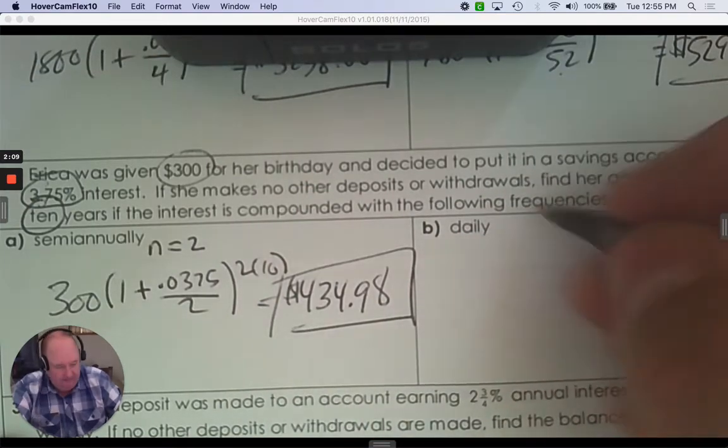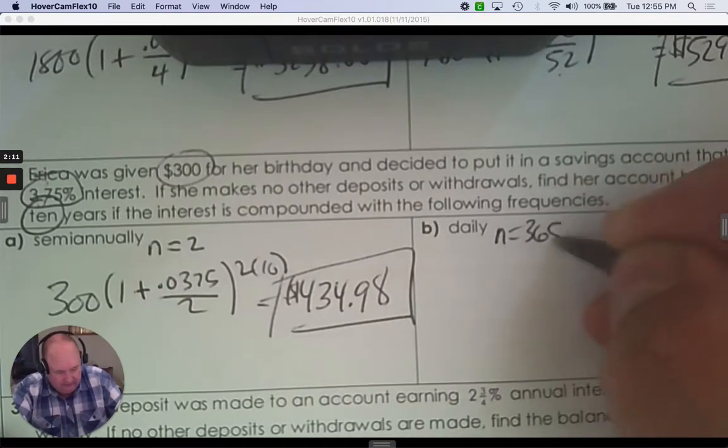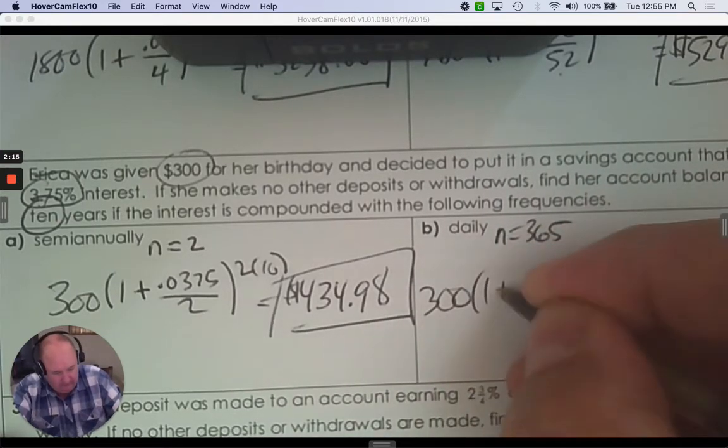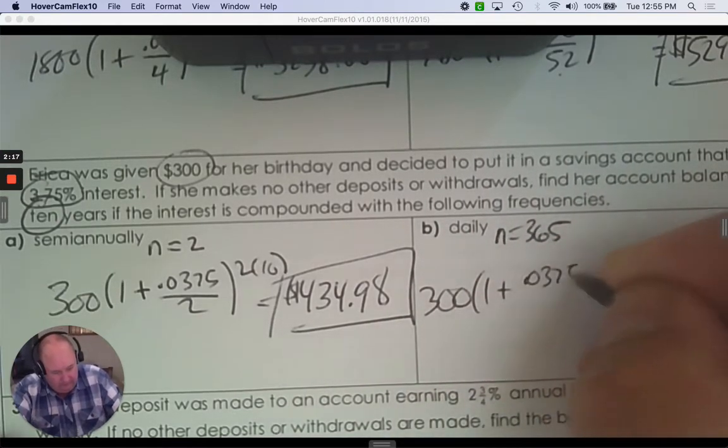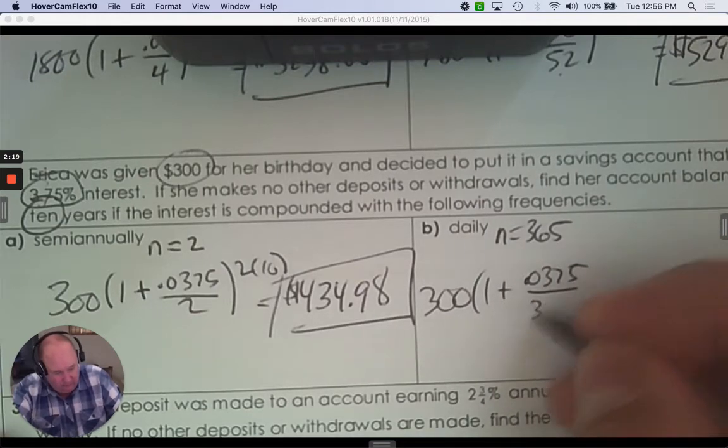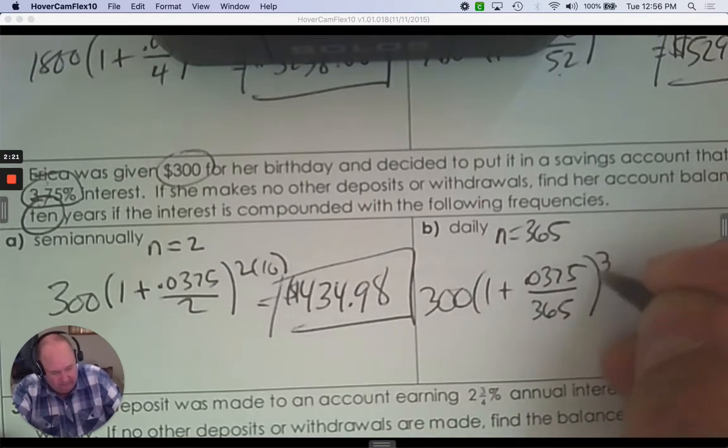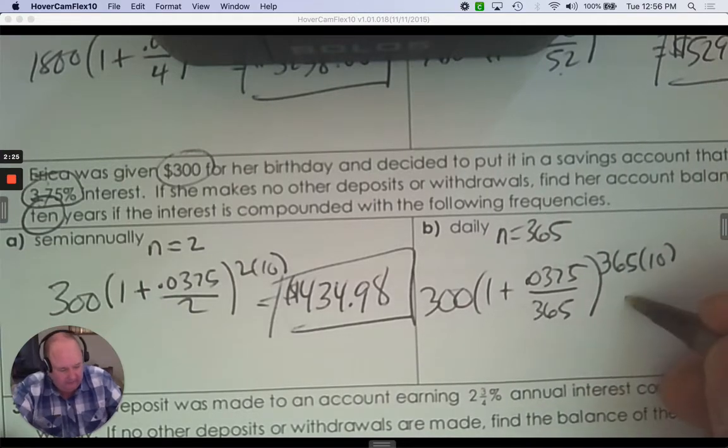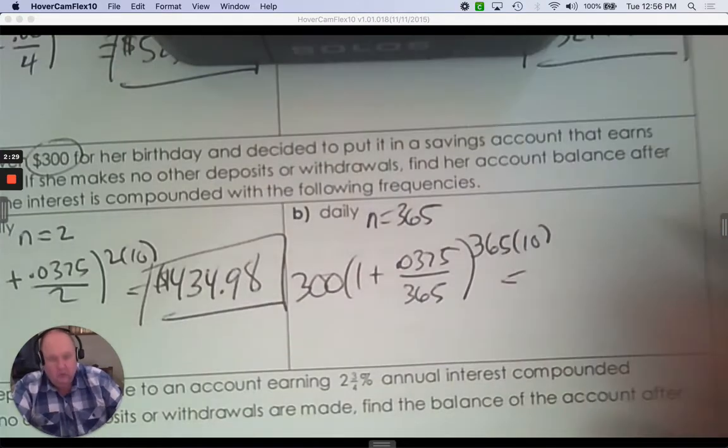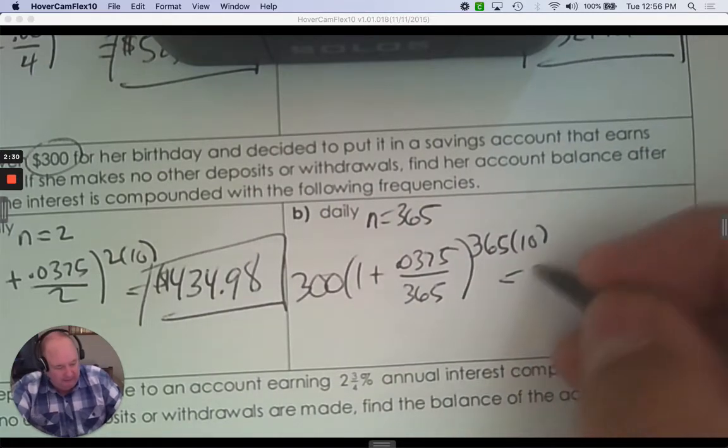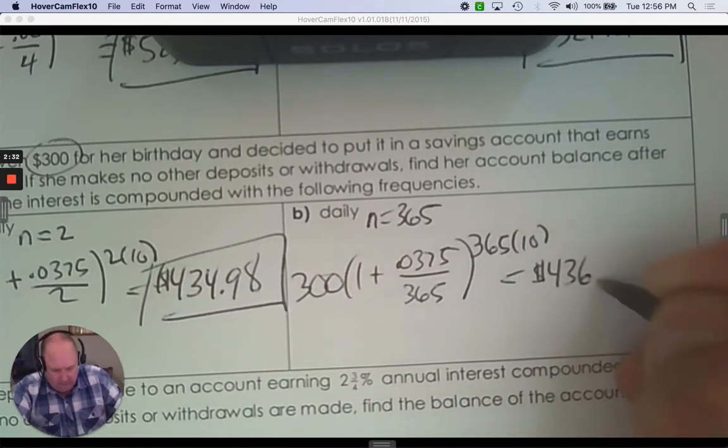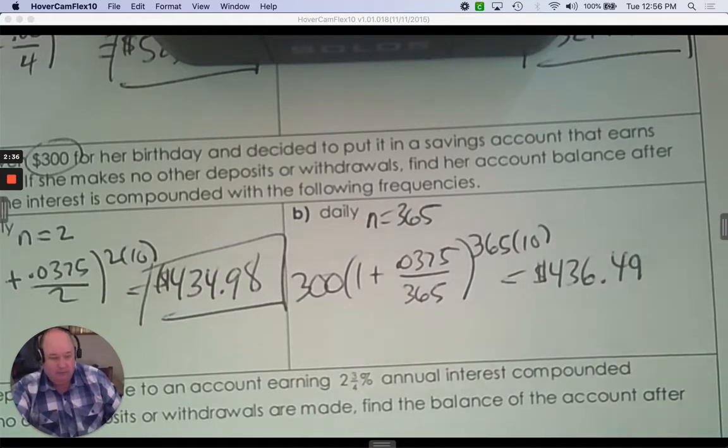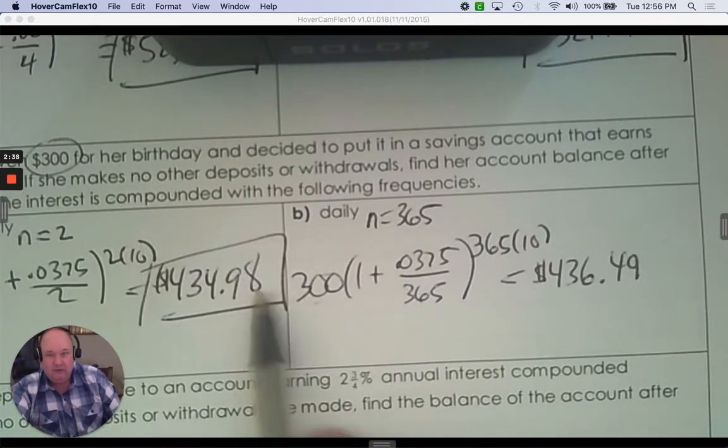Daily means 365 times per year. So everything else would stay the same. Except N would be 365 in the formula. And then again, use your calculator. You'd expect it to be a little more, which it is. Not a lot more. $436.49. The more money you start with, the more difference you'd see.